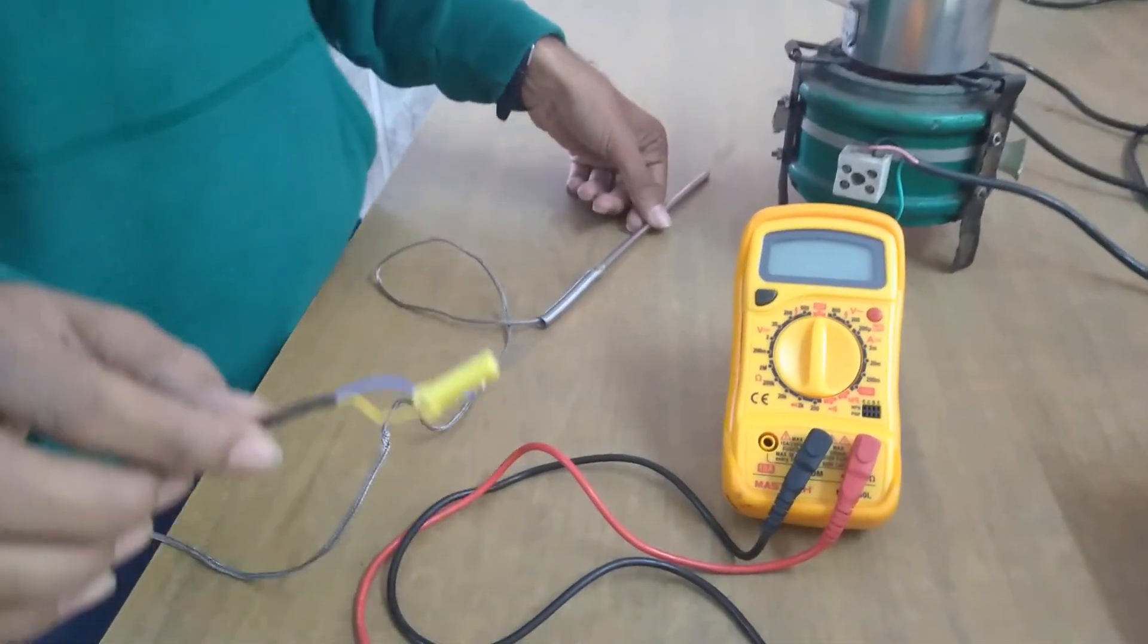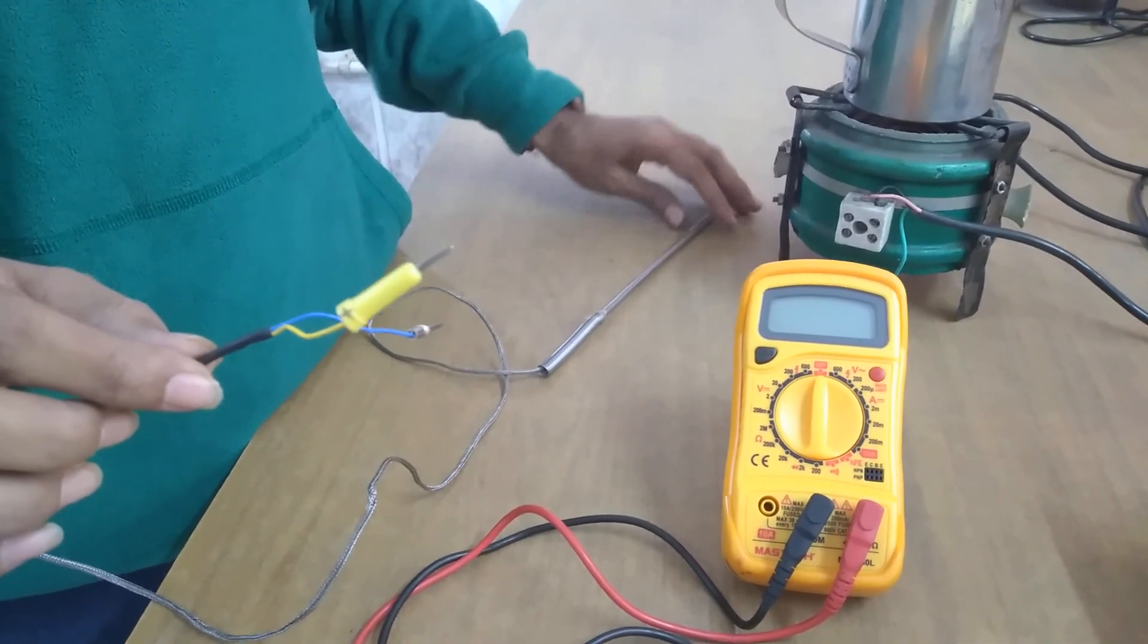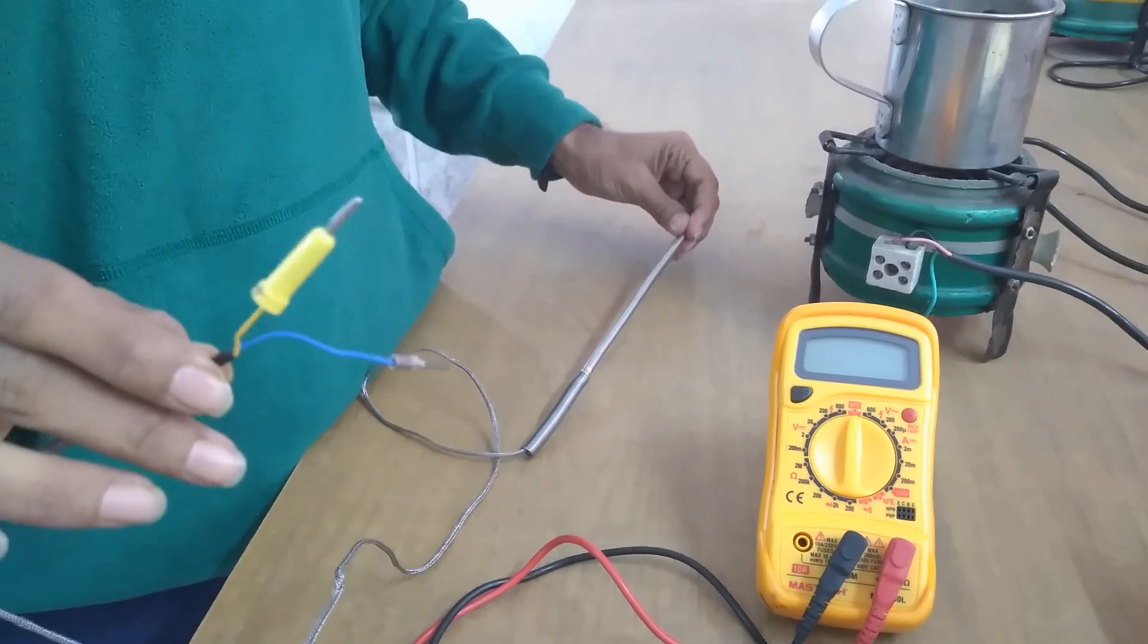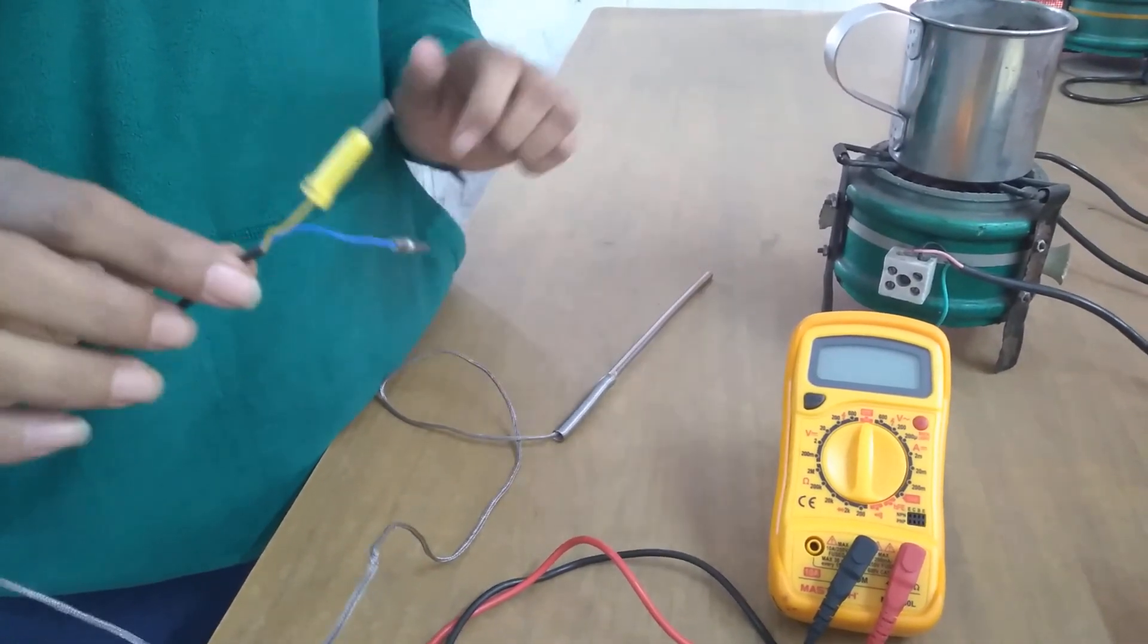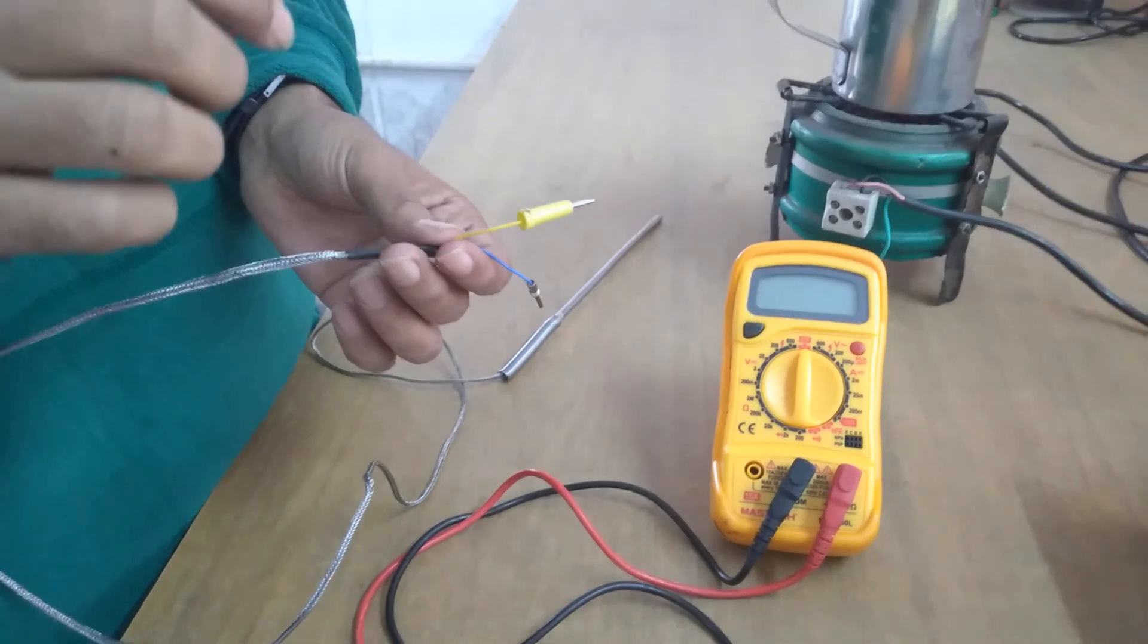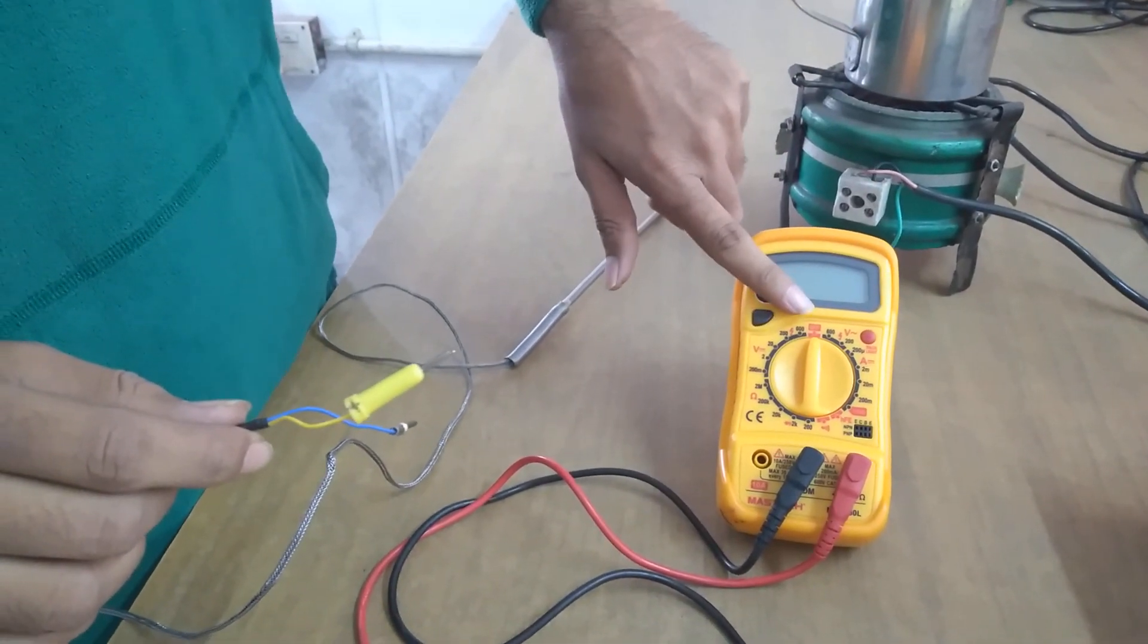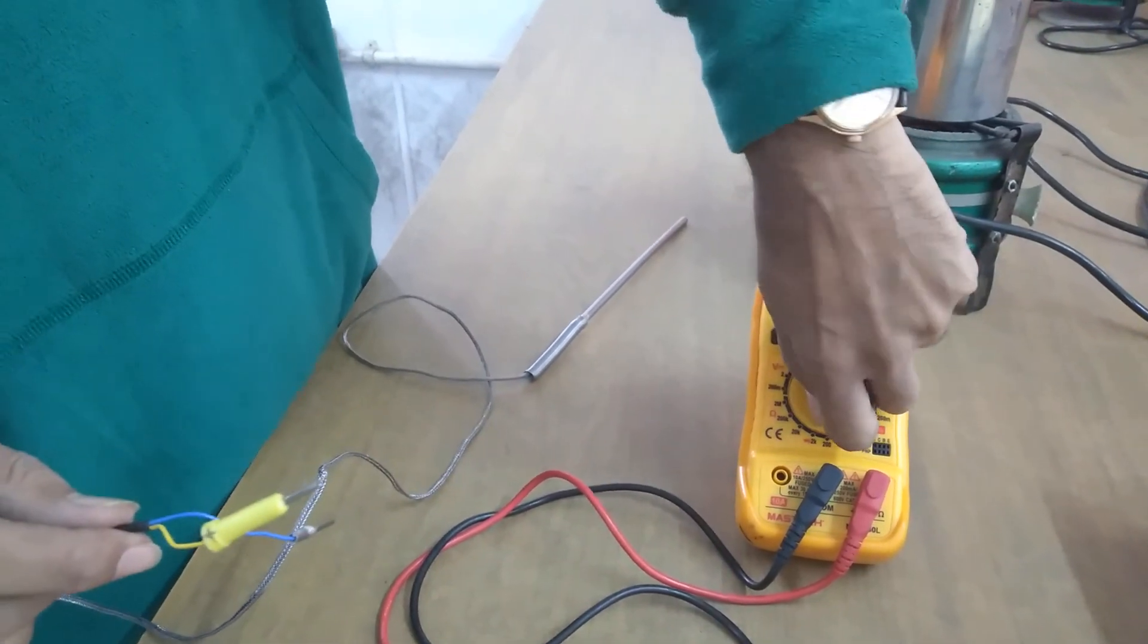Now in this part of the experiment what we will do is we will keep the hot junction, hot junction is right over here and the cold junction is over here. So we will keep both the hot junction and the cold junction at room temperature and try to verify what happens to the output voltage, whether it becomes zero volt or not. So with this DVM we are going to the voltmeter range to 200 millivolts.